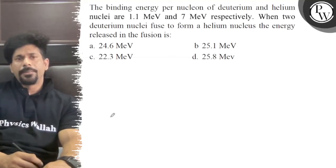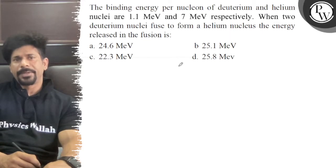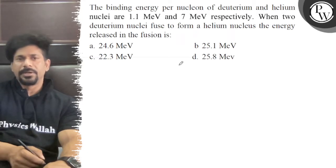Hello, let's see the question. The binding energy per nucleon of deuterium and helium are 1.1 MeV and 7 MeV respectively. When two deuterium nuclei fuse to form a helium nucleus, the energy released in the fusion is: